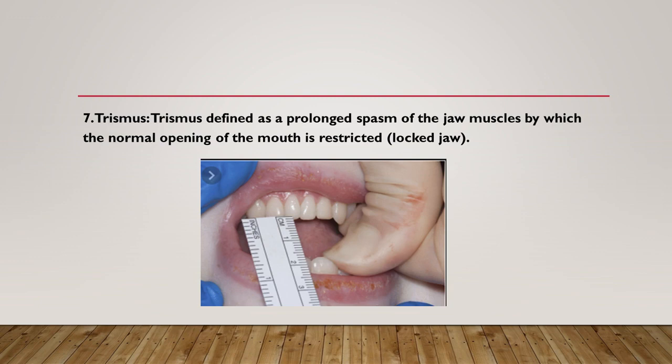Use the minimum effective volume of local anesthetic solution. Management: heat therapy consisting of applying hot moist towels to the affected area for approximately 20 minutes. Use analgesics and muscle relaxants. The patient is advised to initiate physiotherapy consisting of opening and closing the mouth, as well as lateral excursions of the mandible. Chewing gum is another means of providing lateral movement of the temporomandibular joint.